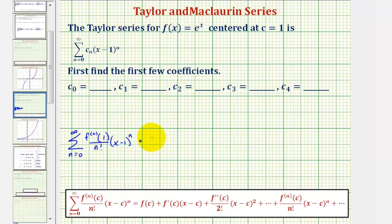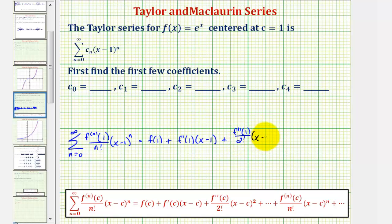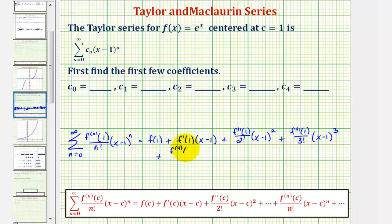So when n is zero, we would just have f of one, plus when n is one, we have f prime of one times the quantity x minus one, plus when n is two, we have the second derivative of f evaluated at one divided by two factorial times the quantity x minus one squared, plus when n is three, we have f triple prime of one divided by three factorial times the quantity x minus one cubed. And to find c sub four, we have the fourth derivative of f evaluated at one divided by four factorial times the quantity x minus one to the fourth.